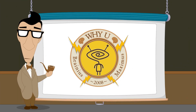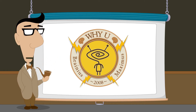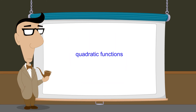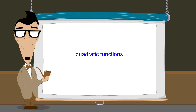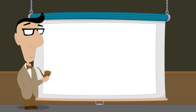Hello, I'm Professor Von Schmohawk and welcome to Why U. In the previous lecture, we examined two ways in which quadratic functions can be written. These two common forms of a quadratic function are the general form and the vertex form. Regardless of its algebraic form, the graph of a quadratic function in a single variable is always a parabola.